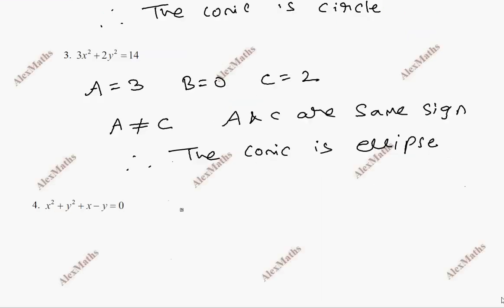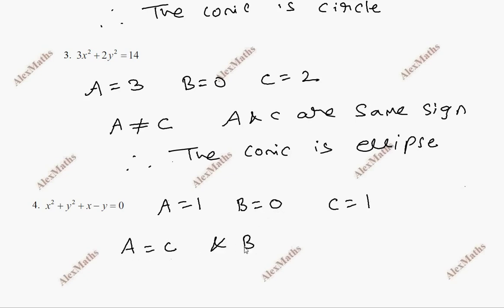Question number 4: A value is 1 (X² coefficient), B is 0 (XY term), and C is 1 (Y² coefficient). We pay attention: A equals C and B equals 0. Therefore the conic is a circle.